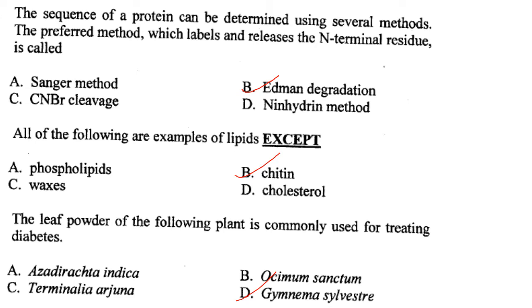The leaf powder of which plant is commonly used for treating diabetes? It is Gymnema sylvestre. Answer is option D.